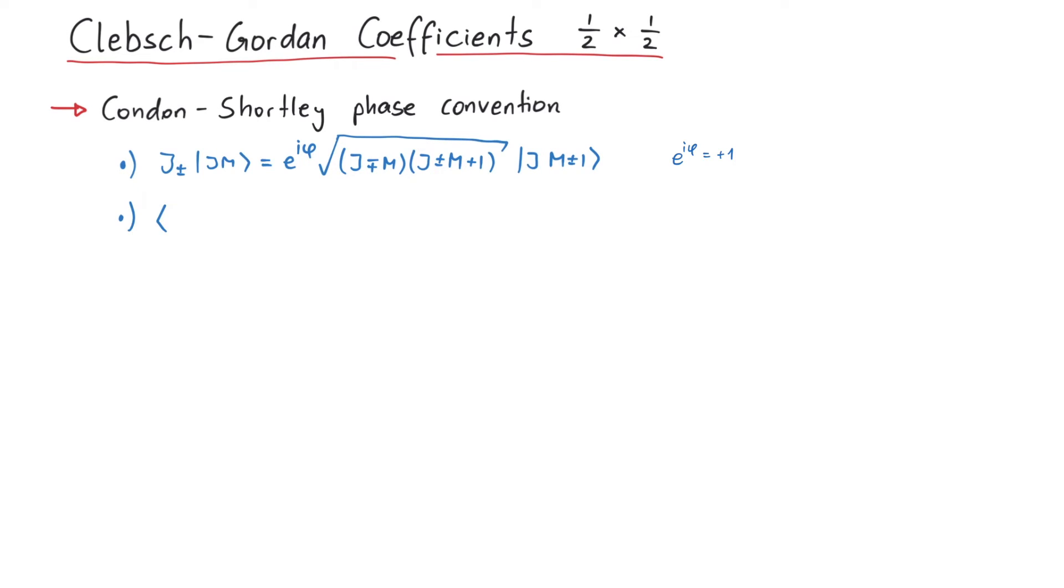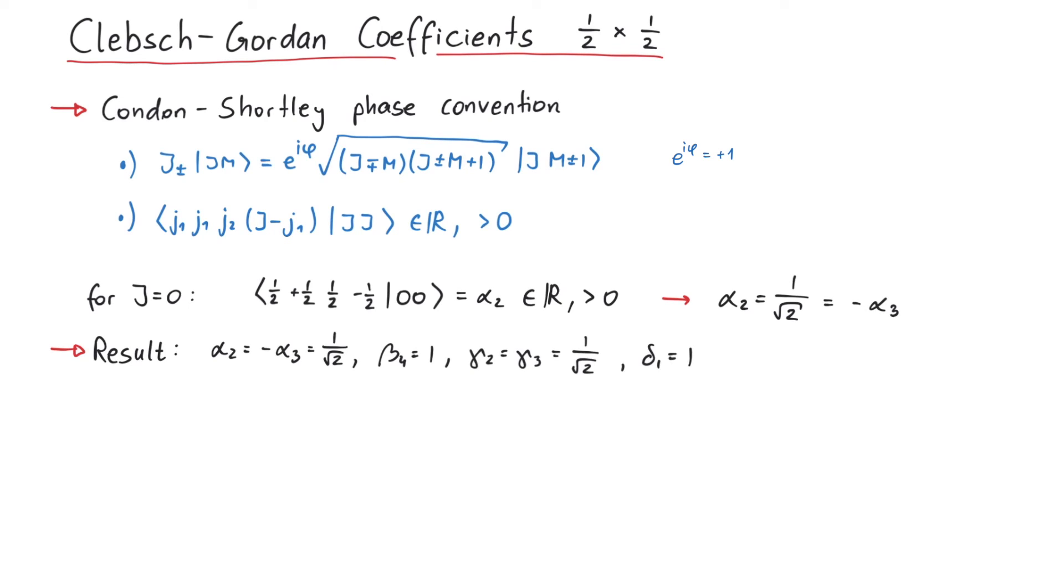And second, that the phase of the following Clebsch-Gordan coefficient is also chosen to be positive and real as well. Using these two conditions, it is possible to determine all six phases that we assumed earlier. For example, if both spins coupled to total spin 0, the above-mentioned Clebsch-Gordan coefficient corresponds to alpha 2, so that is uniquely determined to be plus 1 over the square root of 2, which in turn uniquely determines alpha 3. The other constants now look like this. This means that we now fully calculated the Clebsch-Gordan coefficients for the case of two spin one-half particles.